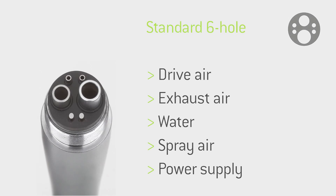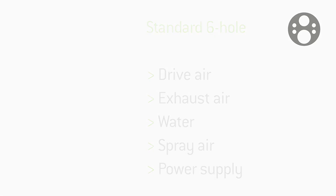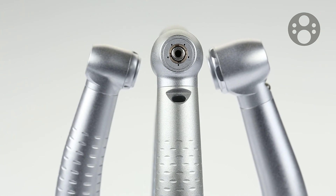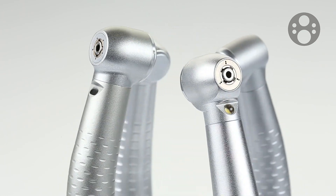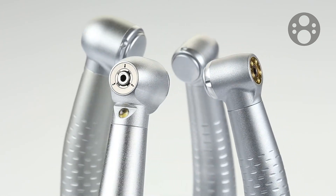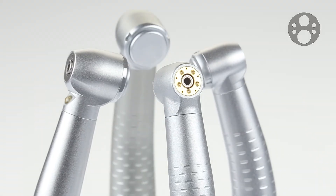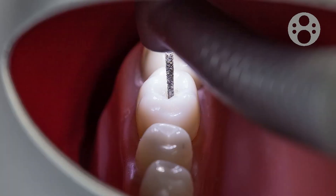The standard six-hole connection has, in addition to the standard four-hole connection, two electrical contacts through which a light can be operated. With this energy, both halogen bulbs and modern LED systems can be operated, allowing optimal lighting of the treatment area.